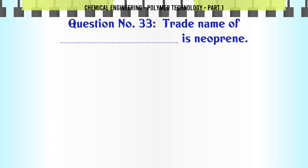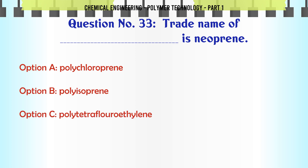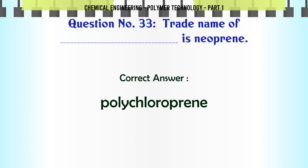The trade name of which polymer is Neoprene? A. Polychloroprene, B. Polyazochloroprene, C. Polytetrafluoroethylene, D. Polyvinyl acetate. The correct answer is Polychloroprene.